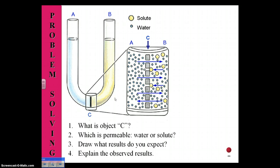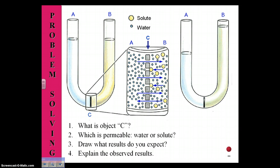Now that you've paused the video, what should we expect to find? In the U-shaped structure, in the middle, portion C here, we can see that it is actually a selectively permeable membrane, with the solute molecules not being able to pass through the membrane. The water solvent molecules, however, are allowed to pass through the membrane.